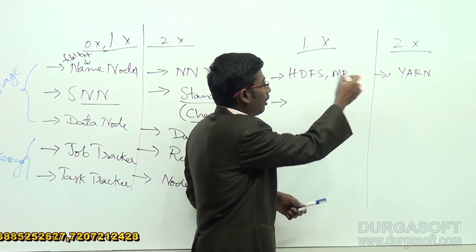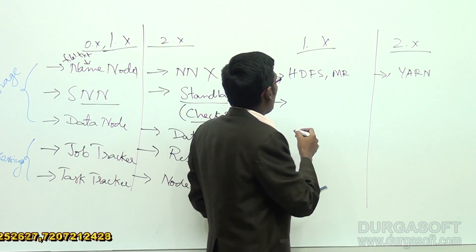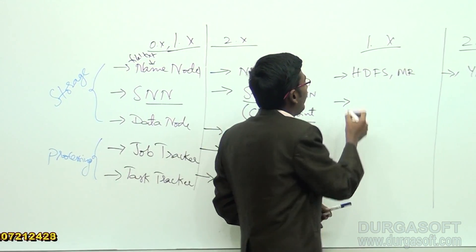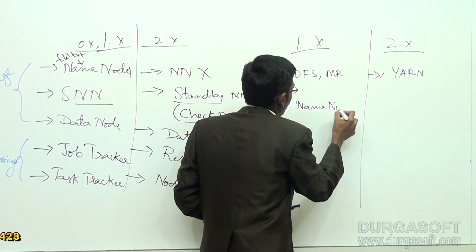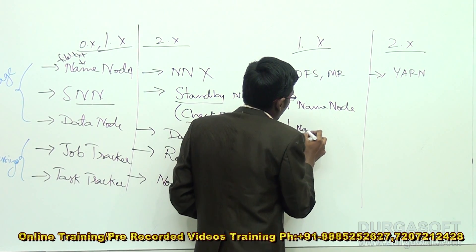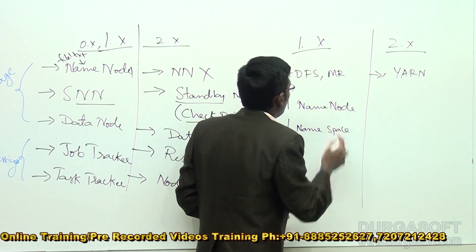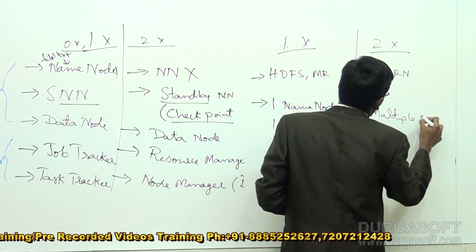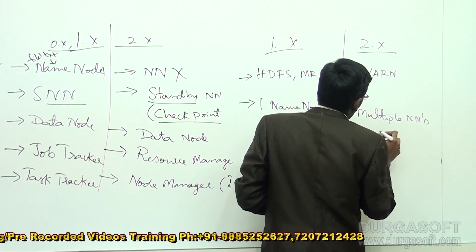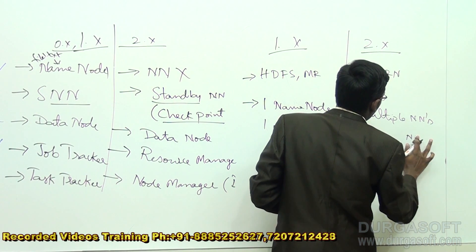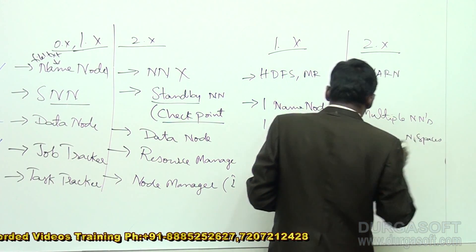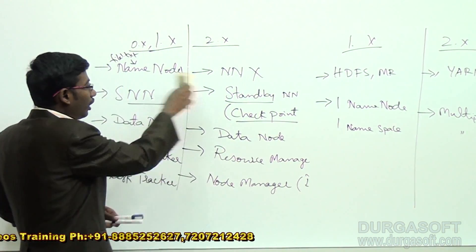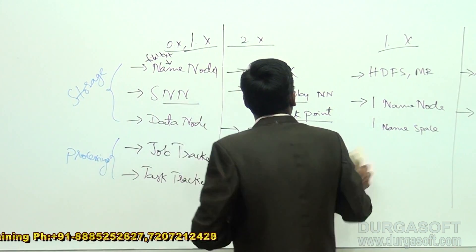At the component level, in 1.x when dealing with name nodes, we had to maintain only one name node and one namespace. But in 2.x, we can maintain multiple name nodes and multiple namespaces. What are the advantages of dealing with multiple name nodes and multiple namespaces? Let's go into detail to understand these architectural differences.